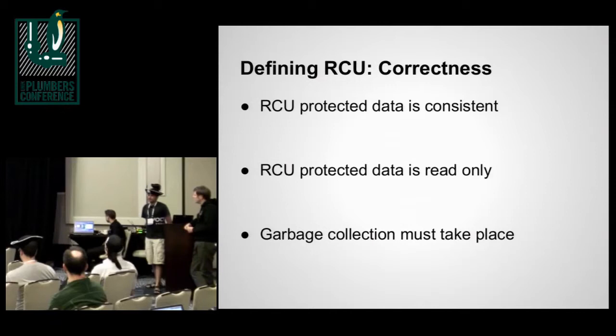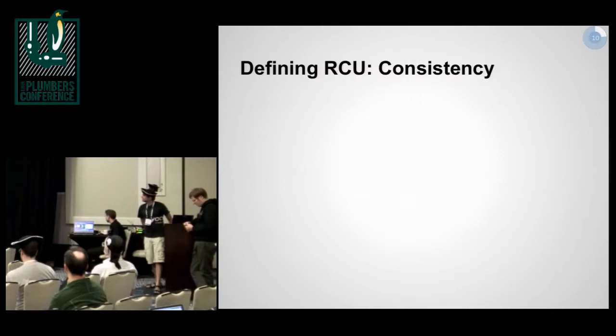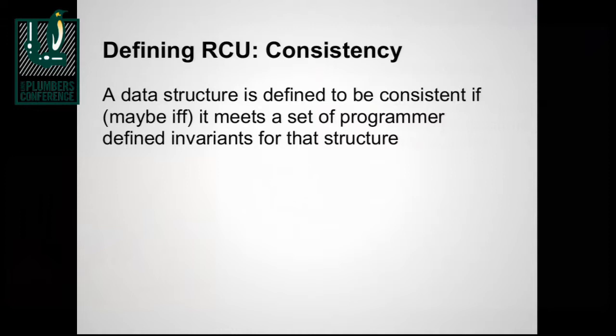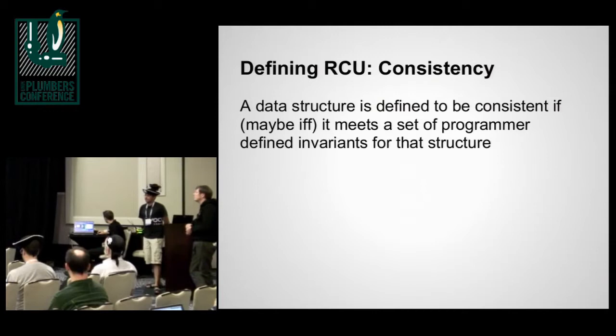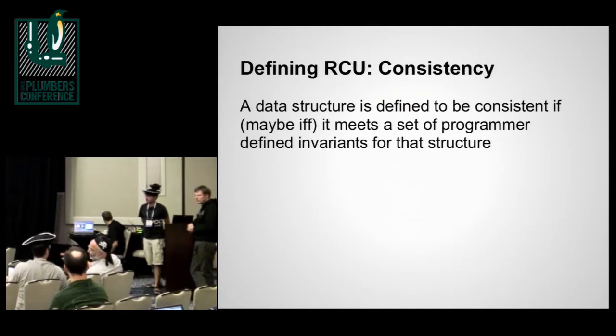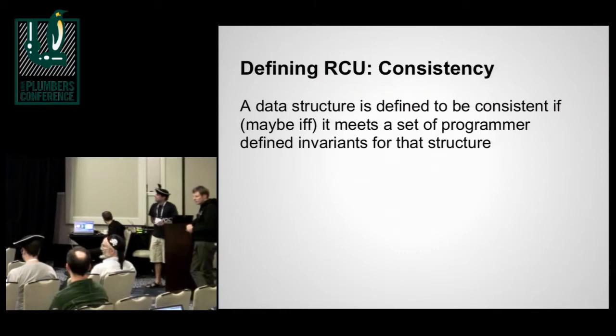Now, I have this word 'consistent' being used. What does consistent really mean? We tried defining that and came up with: it's a set of programmer-defined invariants. As long as these invariants are being met, it's consistent. Think about a doubly-linked list — there are cases with RCU where your next-previous might not be you. It's an inconsistent state, but since hardly anybody traverses backwards, it's okay. It's consistent as far as we are concerned.